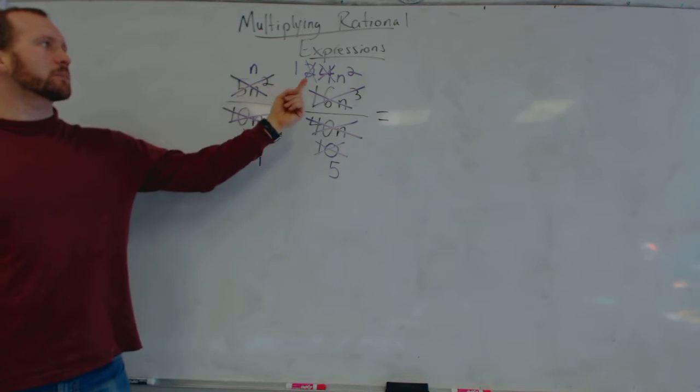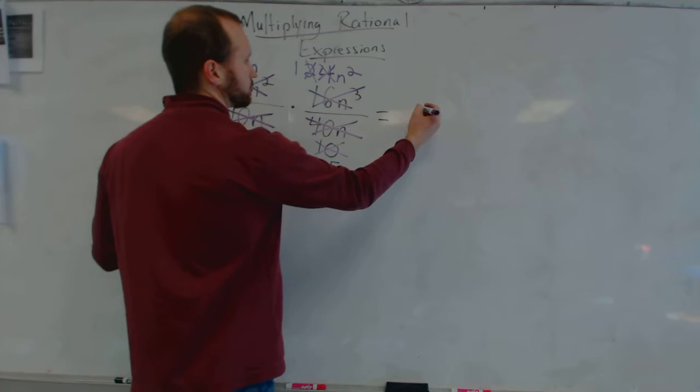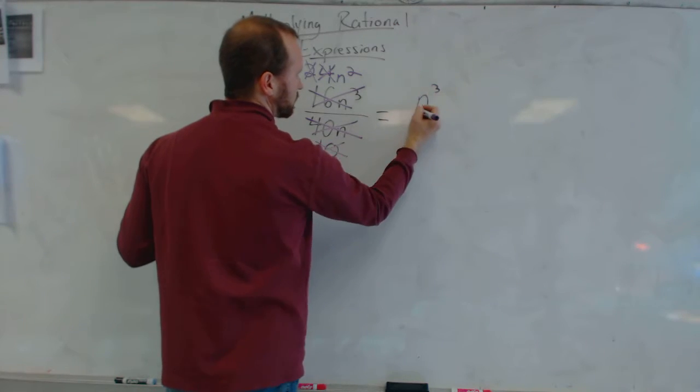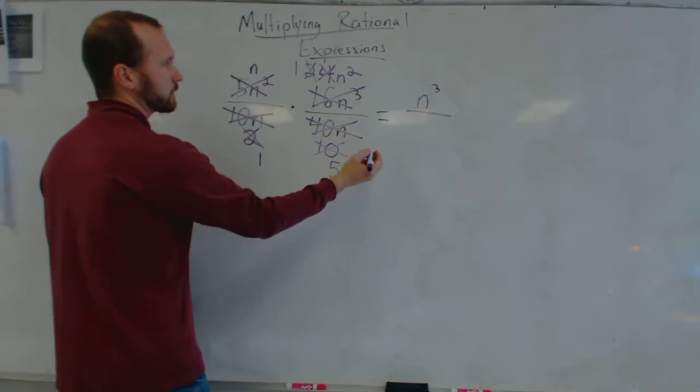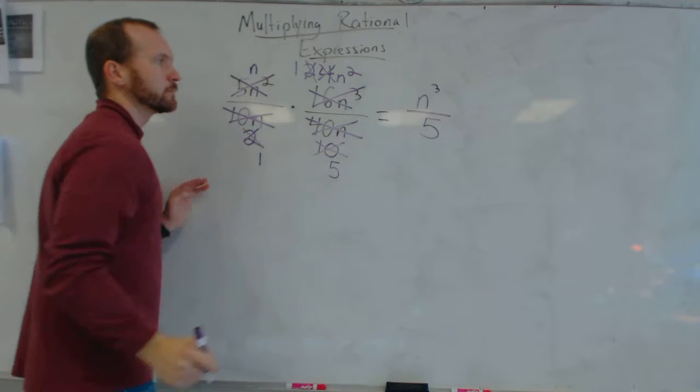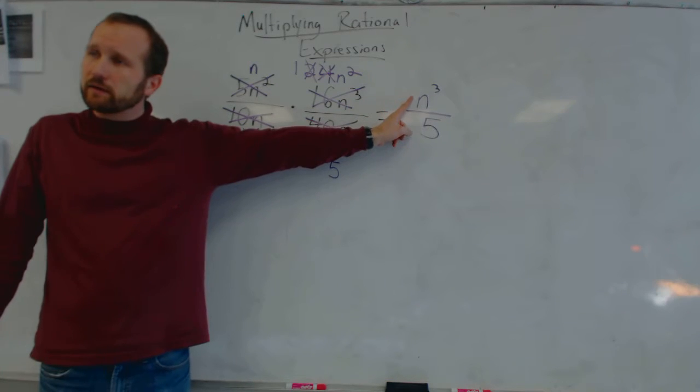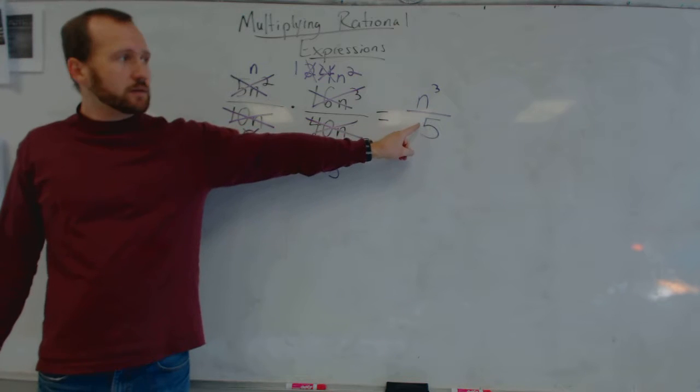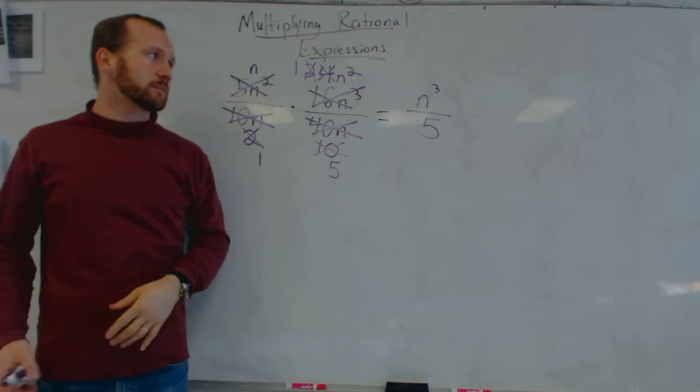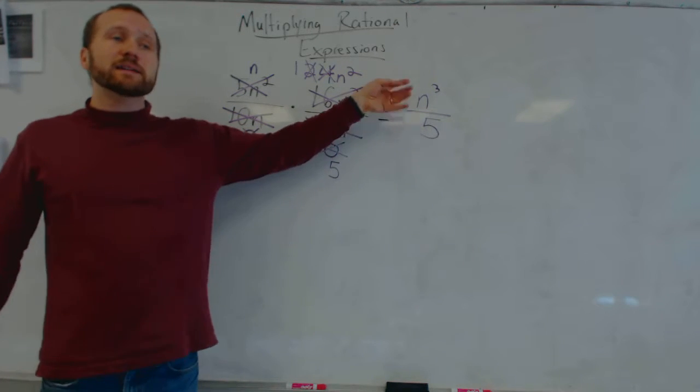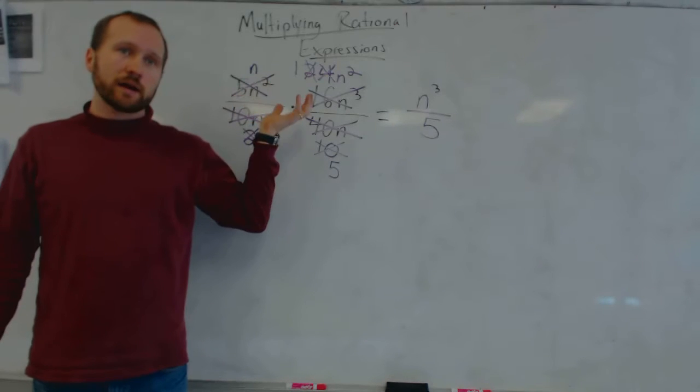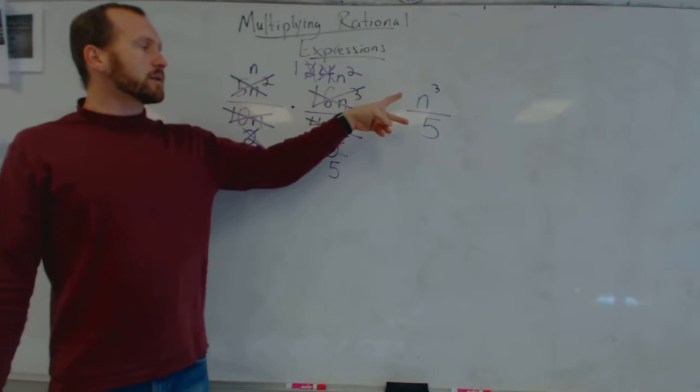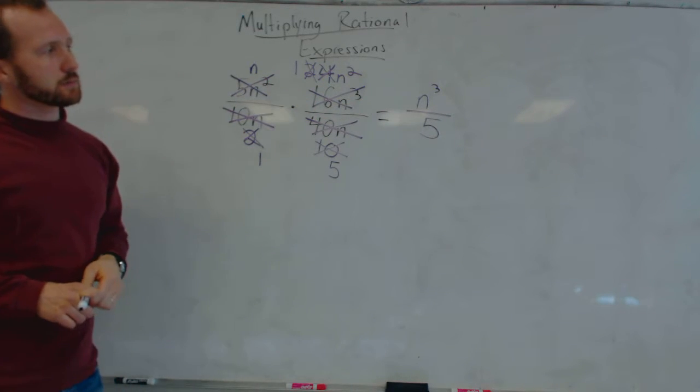So I have n times 1n squared, which is n cubed, and then I have 1 times 5, which is 5. And then I look again just to make sure, are there any factors in the top that are the same in the bottom that I can cancel? Not unless n equals 5. Which means I did a good job. I got them all, right? But if you didn't get them all, you'd see them now, hopefully, and then you can reduce them.